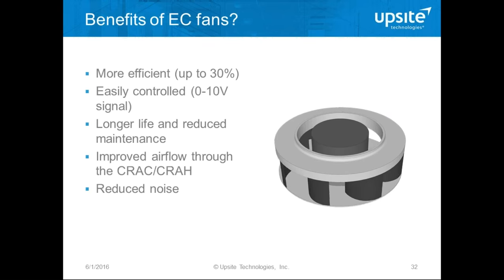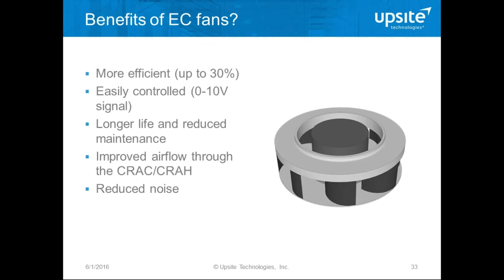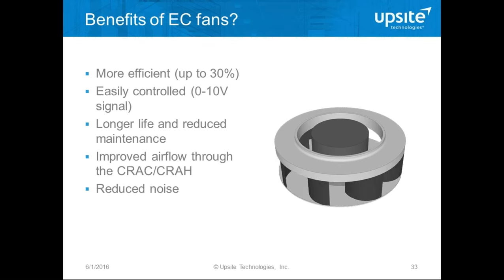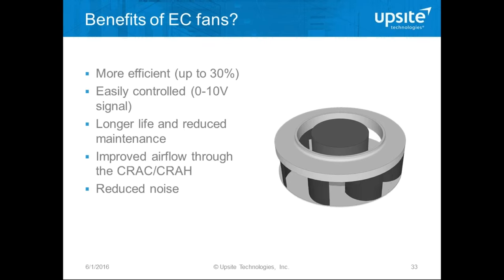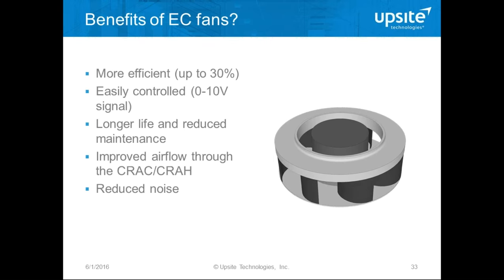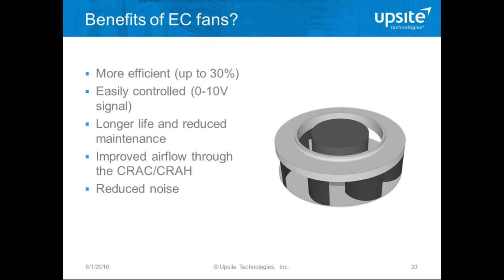Another common upgrade is to look at your cooling units and think about changing the way airflow is supplied. A common practice is to provide EC plug fans — backward curved impellers — which are much more efficient and can be controlled to give variable air volume, thereby matching cooling supply to IT airflow demand. They have a long life, reduced maintenance, can cope with higher pressure drops, and have lower noise.